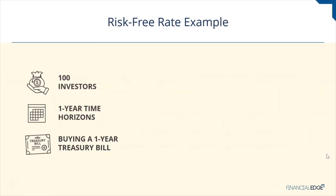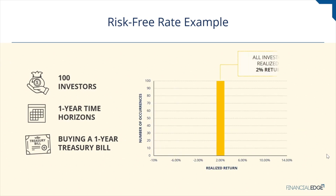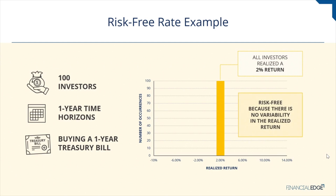Consider 100 investors with one-year time horizons, each buying a one-year treasury bill or any other default-free one-year bond with a 2% expected return. After year one, the return for all investors would always be 2%. It is important to note that the realized return is not certain if sold before one year. Also keep in mind, while government bonds may offer returns that are risk-free in nominal terms, they are not risk-free in real terms, since expected inflation can be volatile.